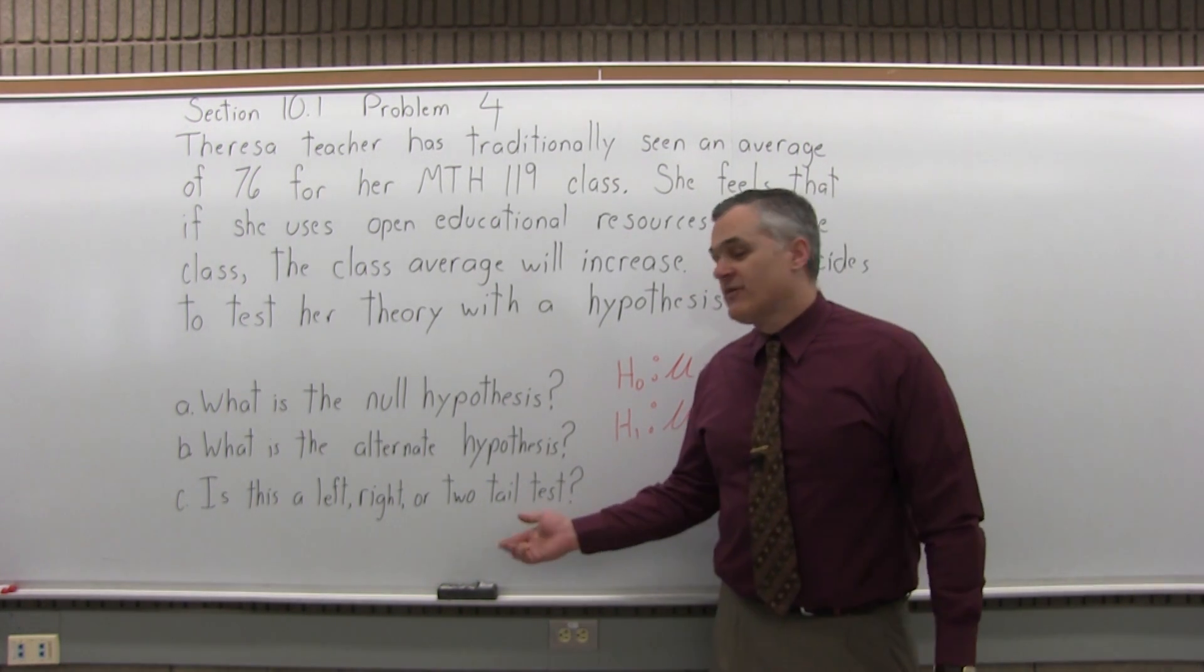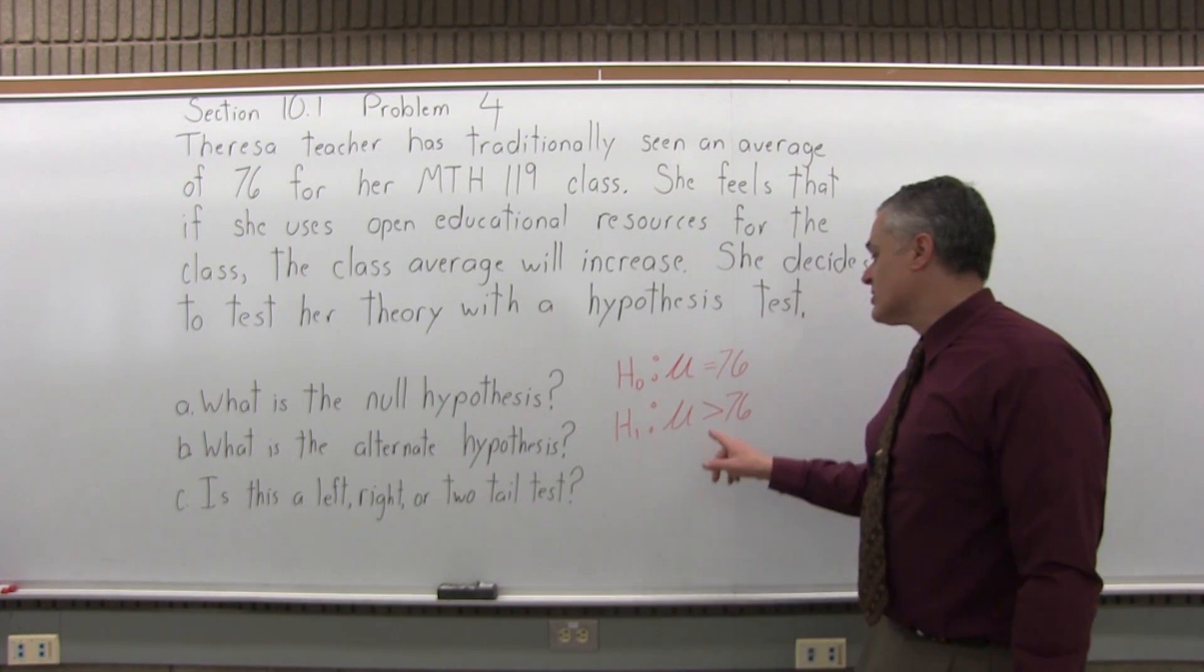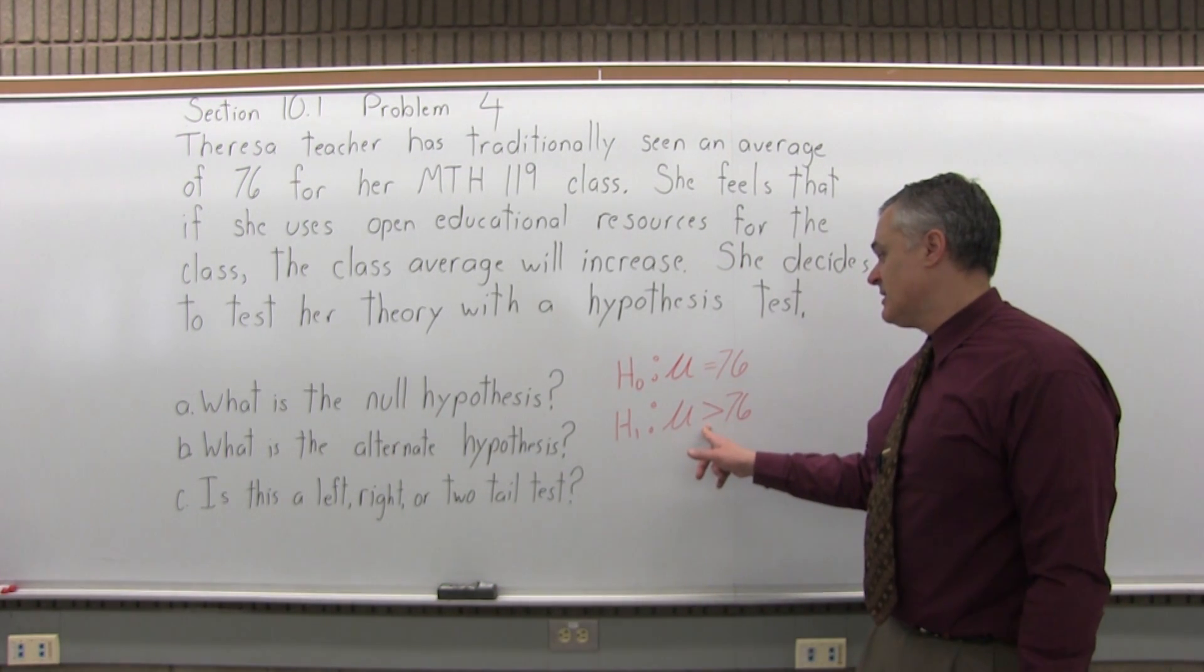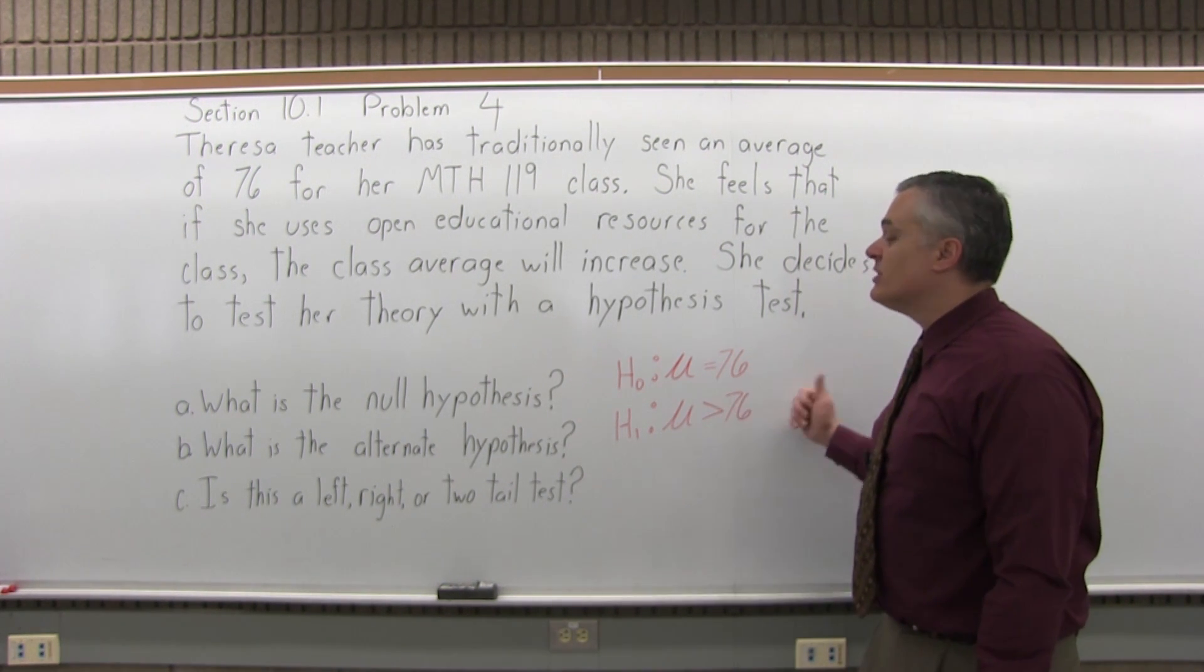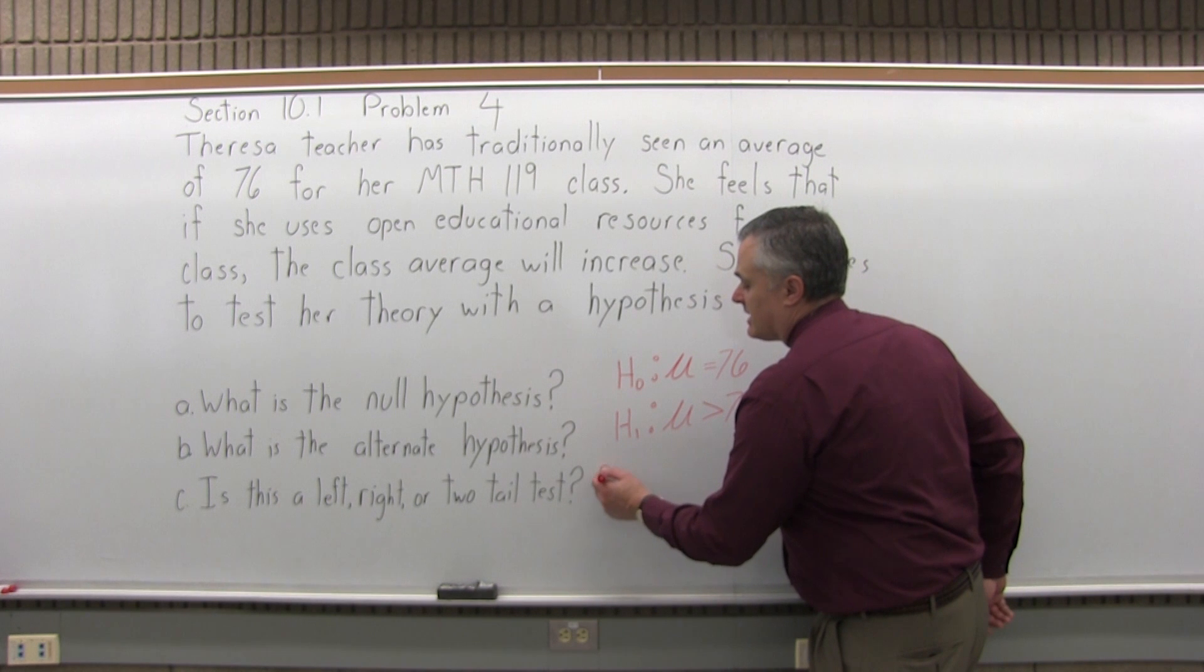Is this a left, right, or two-tailed test? What you want to do is look at the inequality symbol of the alternate hypothesis. See which direction it's pointing in. This is a greater than symbol, so it points to the right. So what type of test is this? Notice this is a right-tail hypothesis test.